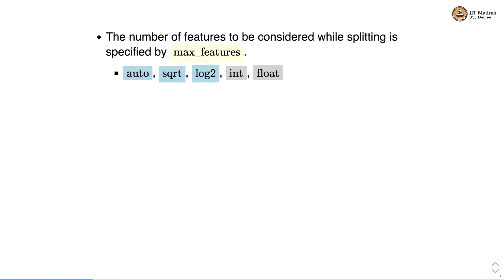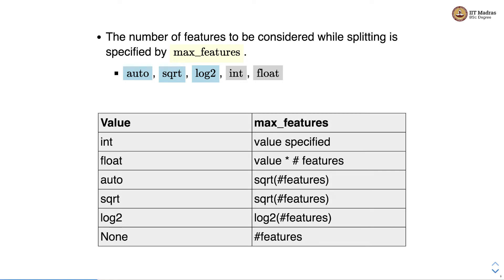The number of features considered while splitting the decision tree is specified by max_features. There are five possible values: auto, sqrt, log2, integer, and float. When integer, max_features is the specified value. When float, features used equal the value times total number of features. When auto or sqrt, the square root of the number of features is used. When log2, log base 2 of the number of features is used. When none, all features are used to decide on the split.